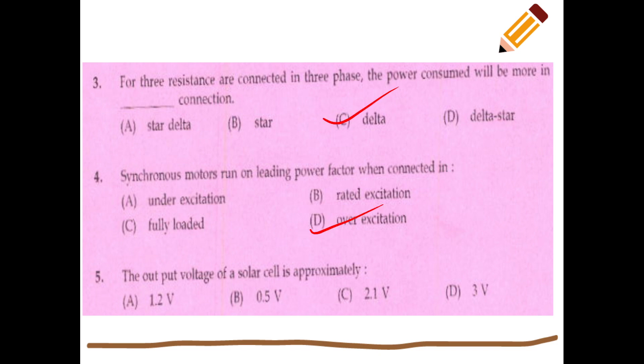Over-excitation. The output voltage of a solar cell is approximately 0.5 volts.